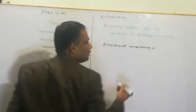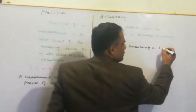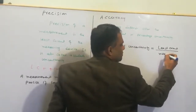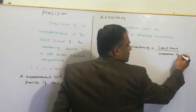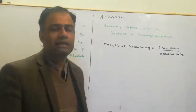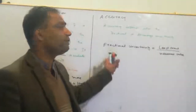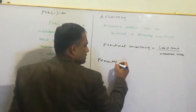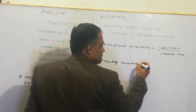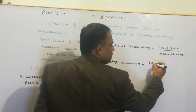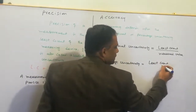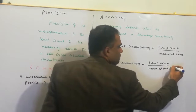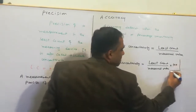Fractional uncertainty is calculated by dividing the least count by the measured value. Percentage uncertainty is equal to least count divided by measured value, multiplied by 100. This is our percentage uncertainty.